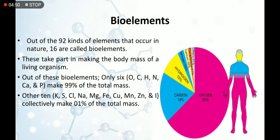Now, bio elements. What are bio elements? Out of 92 kinds of elements which naturally occur in nature, 16 are bio elements. Students, we have a question here: what is the difference between elements and bio elements? Bio elements are the elements that form the body, which are the constituents of the body. These take part in making the body mass of a living organism.